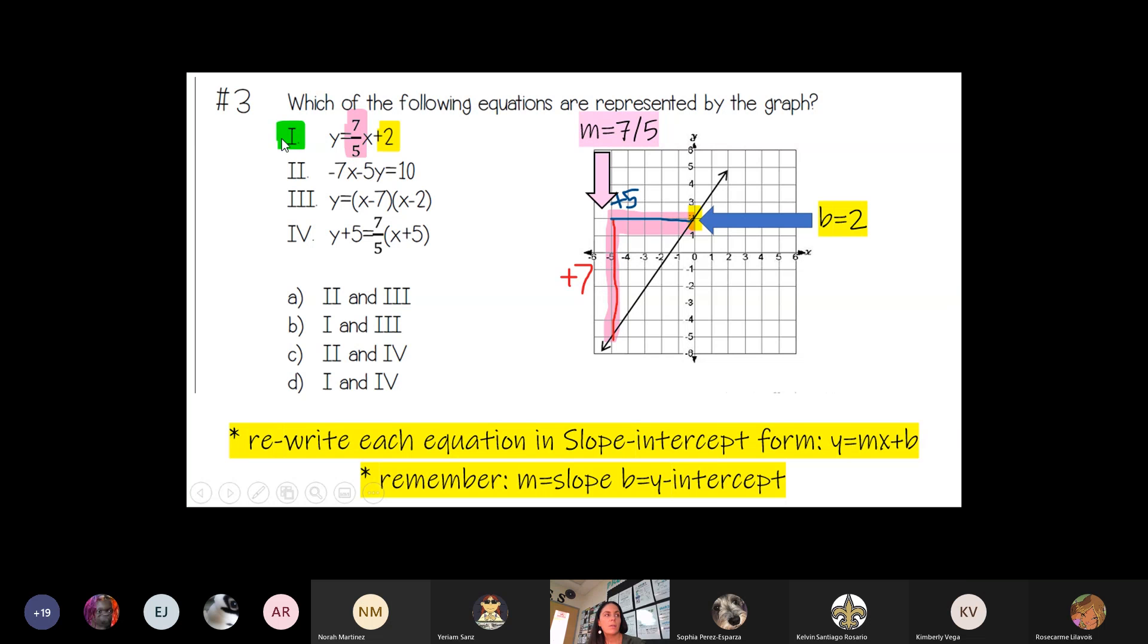So that means that equation 1 does represent this line, so my answer has to have a 1 in it. Well, A does not include equation 1, so I can cross that one out. And equation C does not include the first equation, so I can cross that one out. Now, that means I'm left with either B or D.